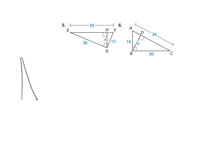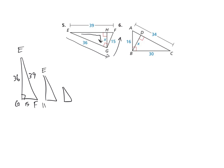Number 5. Again, E to G to F. E to G is 36, G to F is 15, and the hypotenuse is 39. The next one: E to H to G. E to H we don't know, H to G is X, and G to E is 36. I don't need to do the small one because I can see these two are in the right positions. So X is to 15 as 36 is to 39. That gives 39X equals 36 times 15 which is 540. Take 540 divided by 39, and X is approximately 13.8.